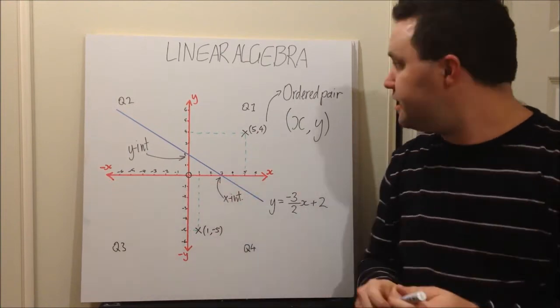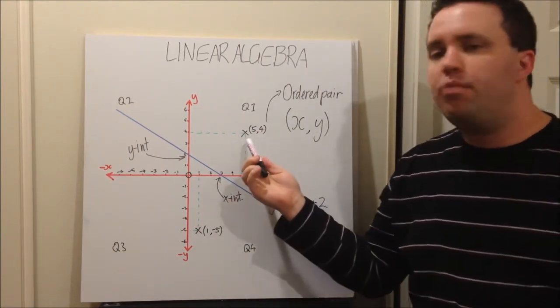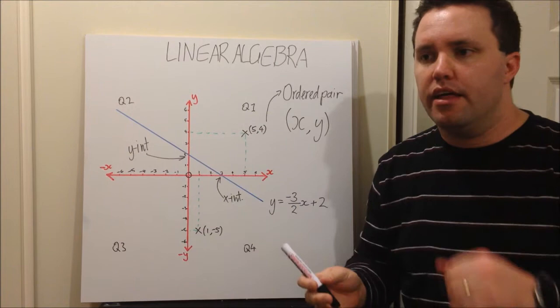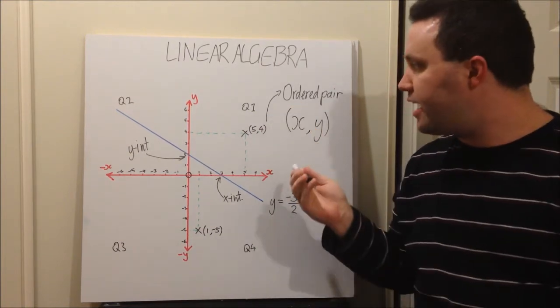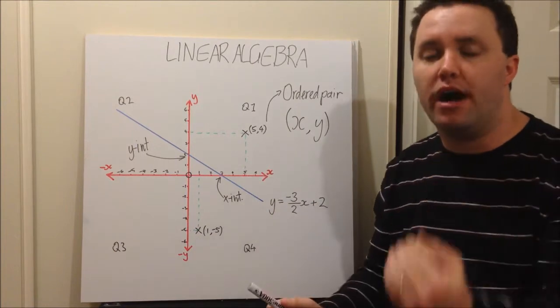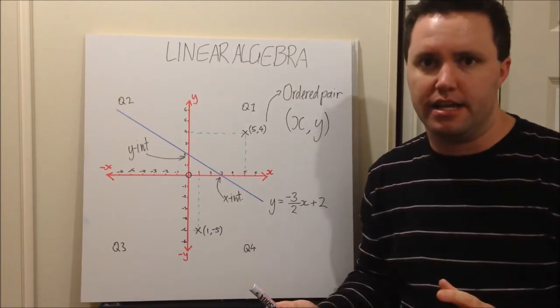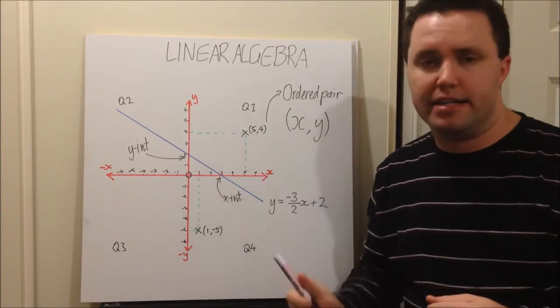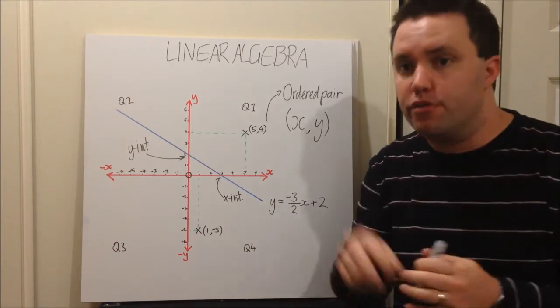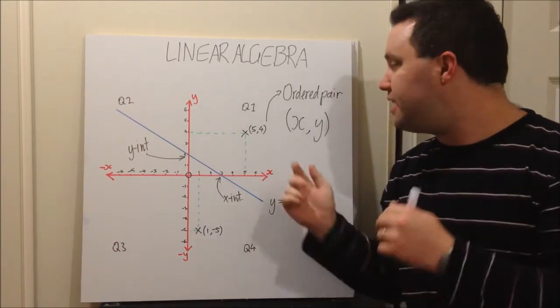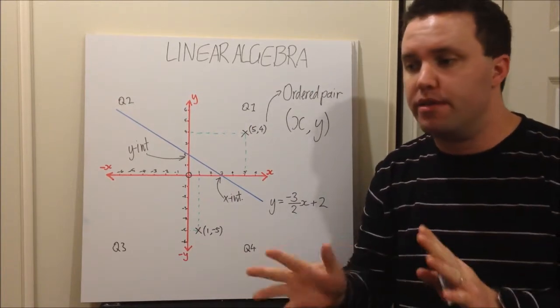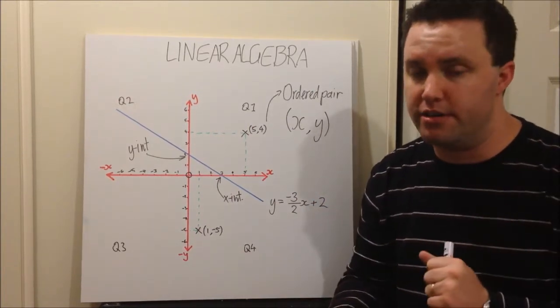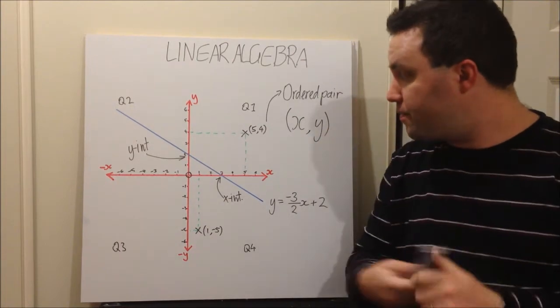So just a couple of basic things first. When we have points in our Cartesian plane, they are written in what we call an ordered pair, which is brackets with the x value, then the y value. It's always going to be like that. When we're dealing with x and y axis, it's an ordered pair of two values. The first one is the x value, the second one is the y value, all the time.